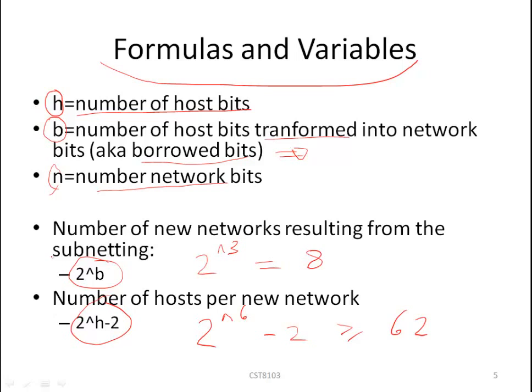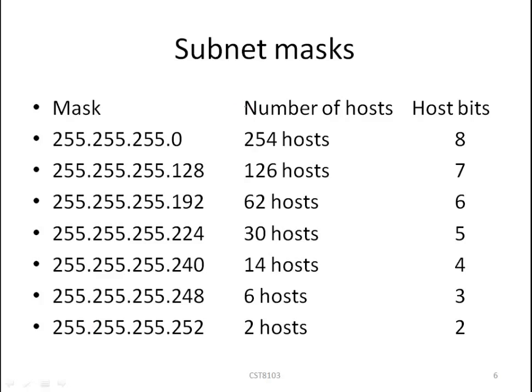You need to remember these formulas as they will be used quite extensively in subnetting exercises. Let's look at some very popular subnet masks. The first one here that you've all seen, the second one .128, the third one .192, .224, .240, .248, and .252. The smallest subnet mask yields two hosts per network, and yes there are instances where you will only have two hosts per network. The specific case being a network connecting two routers.